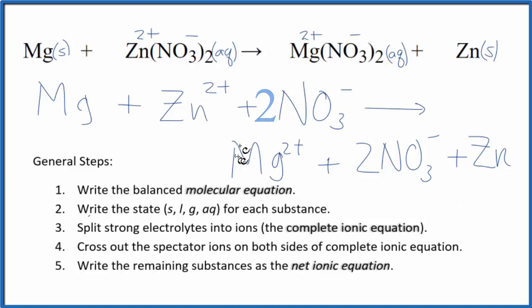As I look at this, I can see I made an error here. There are 2 nitrate ions here, not just 1. So I want to fix that. So I have my 2 nitrates. Now I can cross out the nitrates, because they appear on both sides.